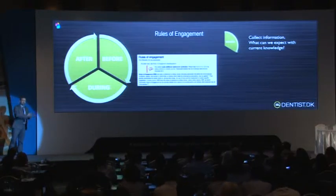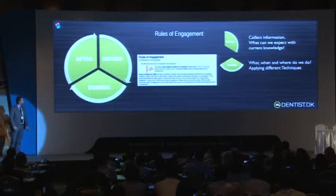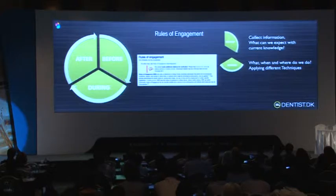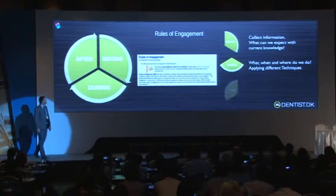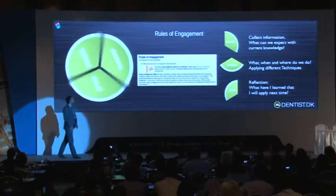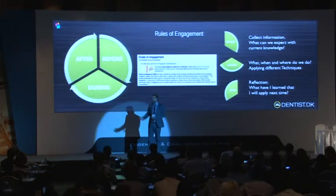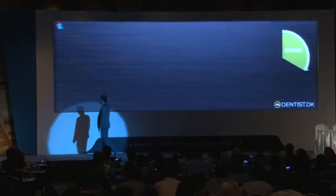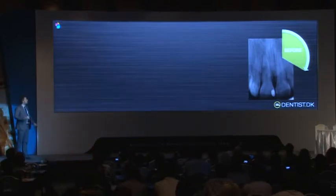Rules of engagement come from the military world and they are not distinctive rules — it's not like a mandatory 'you must do this' — but it's some kind of guidelines that we use to get where we want to go. So first we start in the before. We try to collect the information, apply this, and say what can we expect to get with the current knowledge that we have. Basically, this is what the R2Gate software is supposed to help us with. Let's try to work through a case to see how we apply this.